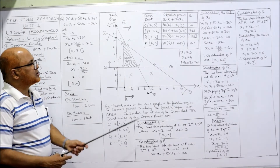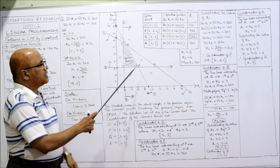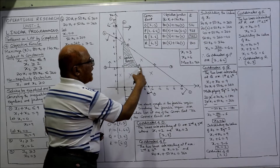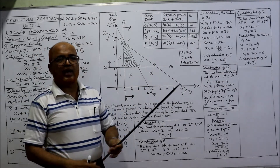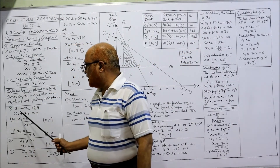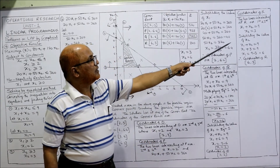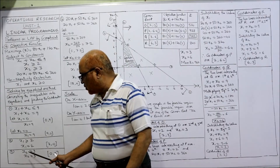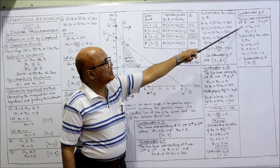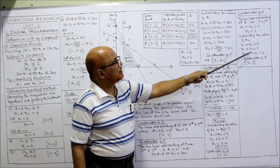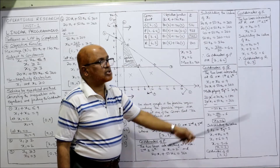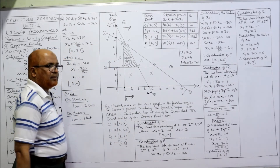At point R, lines 1 and 3 intersect. Line 1: x1 + x2 = 9; line 3: x2 = 3. Substituting x2 = 3 into equation 1: x1 + 3 = 9, so x1 = 6. Coordinates of R are (6, 3).